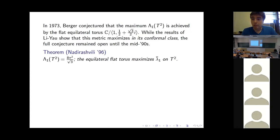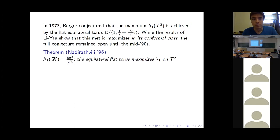The full conjecture remained open for about 25 years until the mid-1990s. Then in 1996, Nadirashvili proved the conjecture, showing that the topological supremum of the first eigenvalue on the torus is exactly 8π²/√3, achieved by the equilateral flat torus.